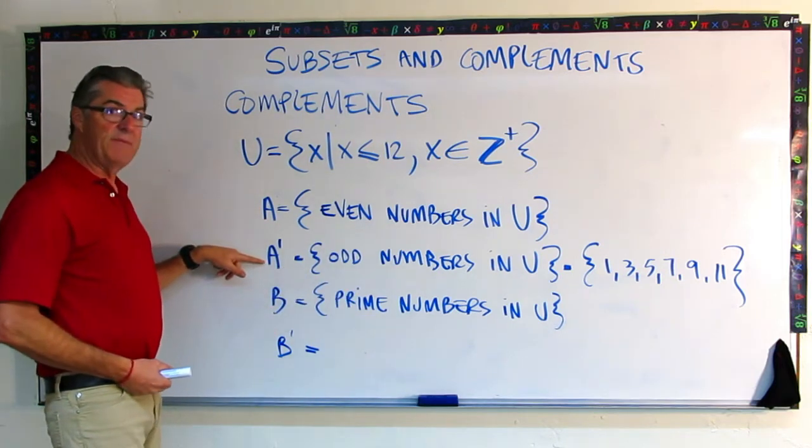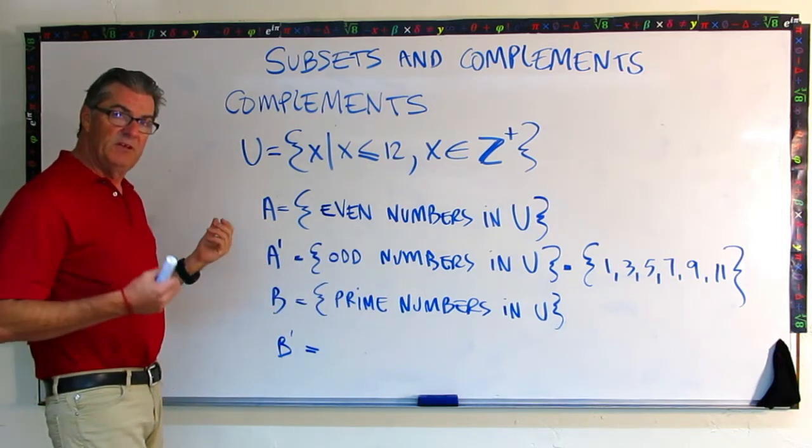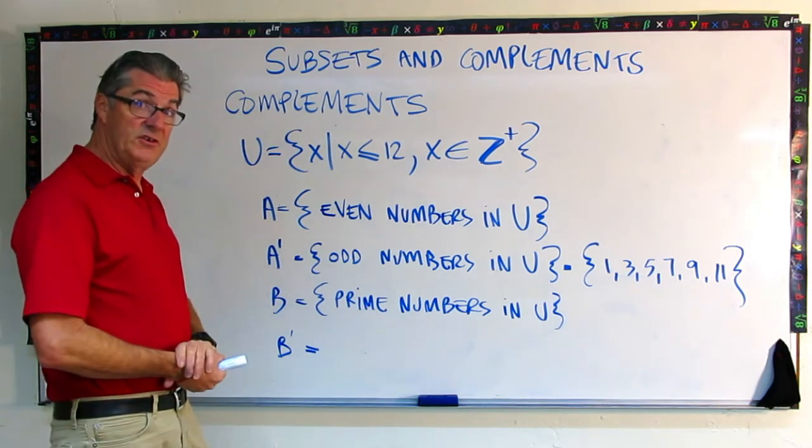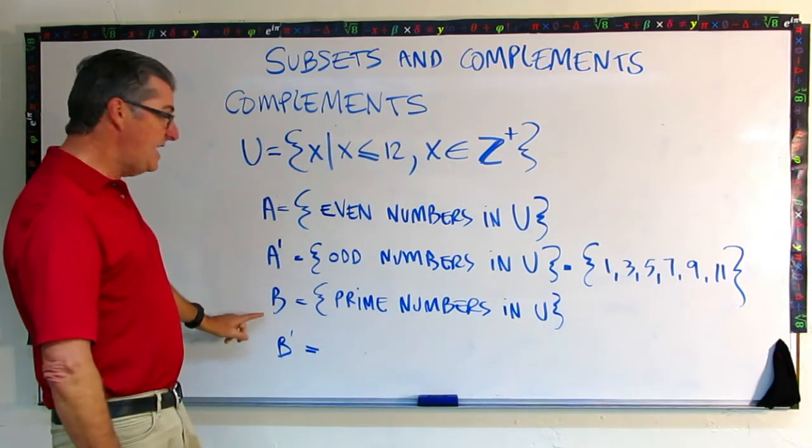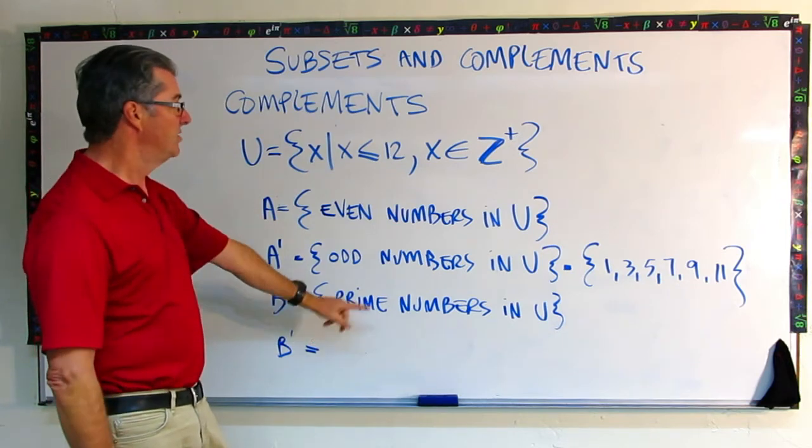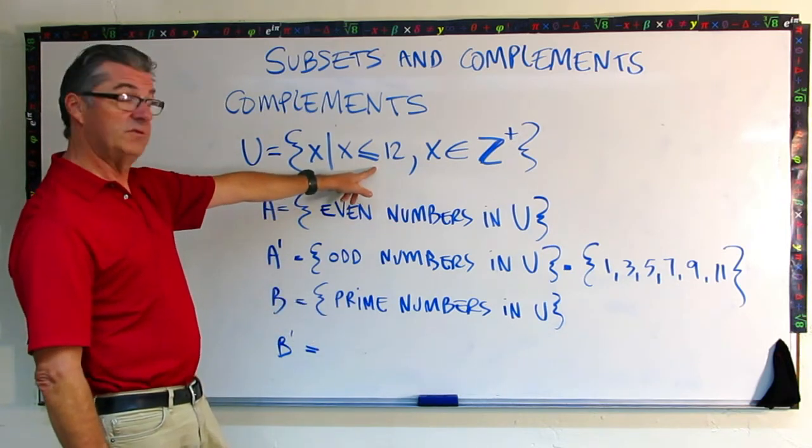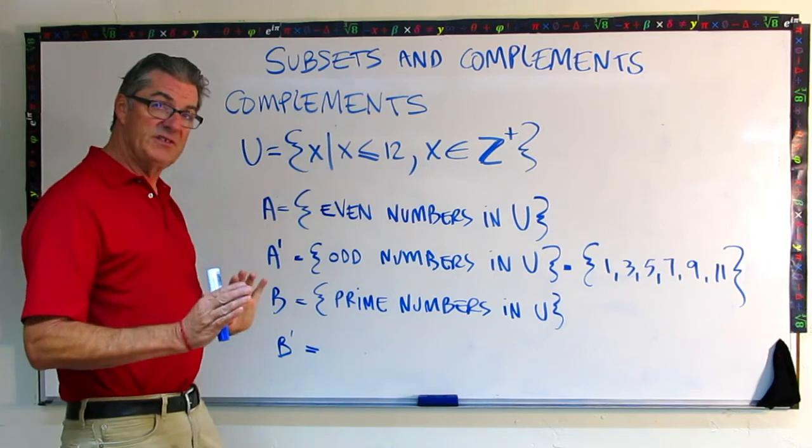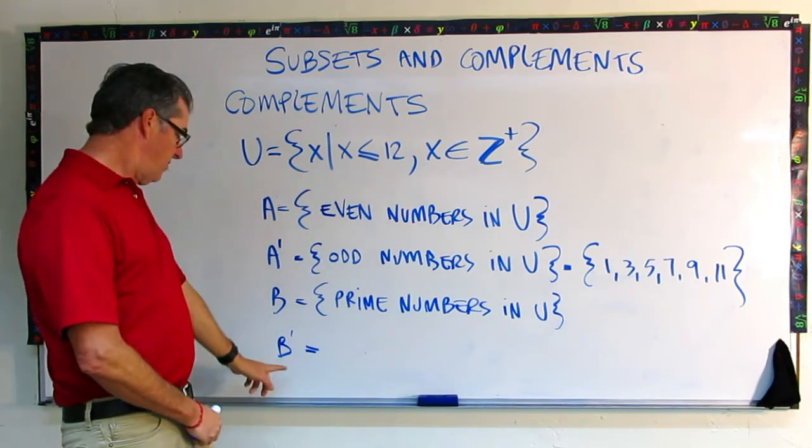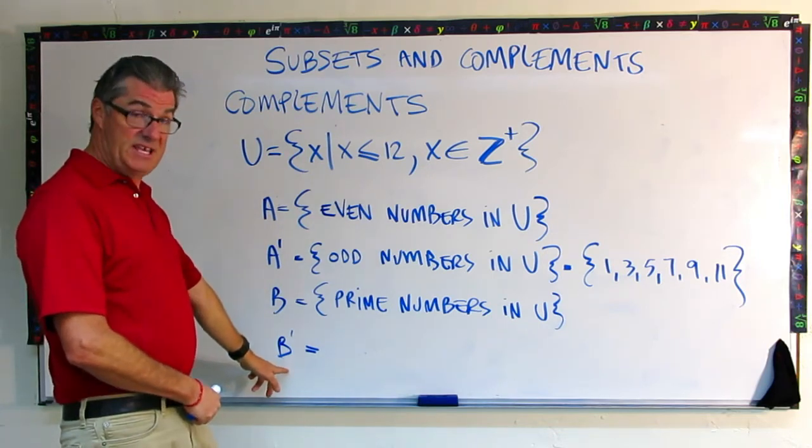So in this case, A and A prime are complements. So now to test yourself, I want you to do the next one here. Set B is the prime numbers in U. Go ahead and pause the video and see if you can write out what is in B prime.